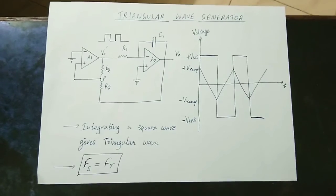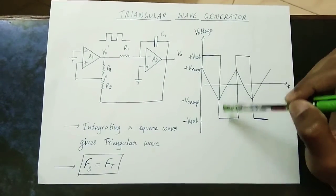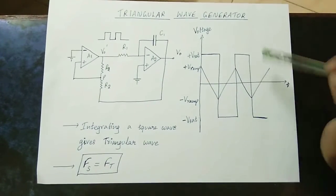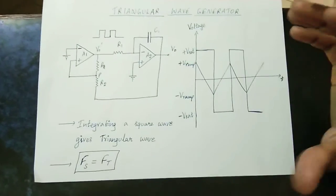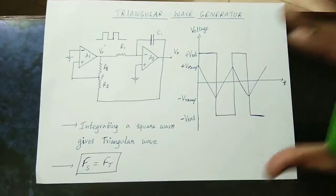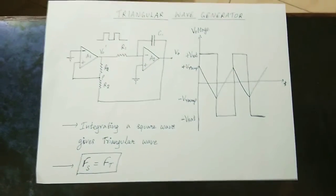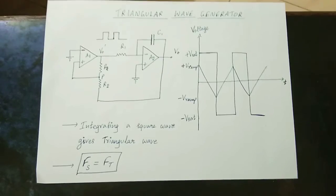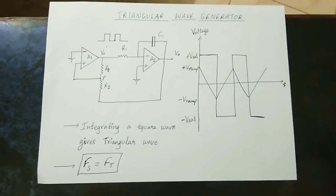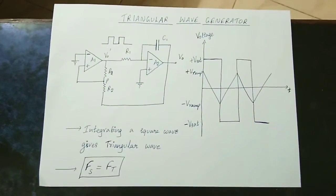If we look at the square wave, we can show the amplitude — plus Vsat and minus Vsat — and there may be amplitude and width. If you know how a square wave is, you will understand. A square wave input gives a triangular wave output.